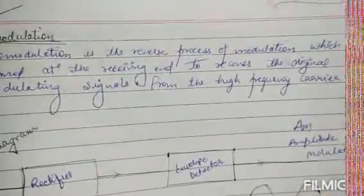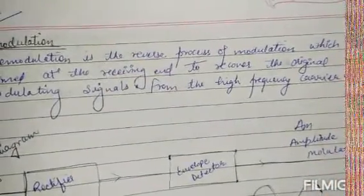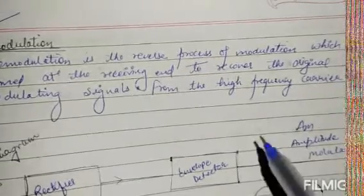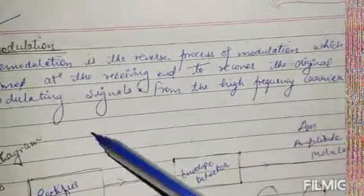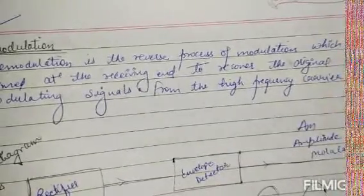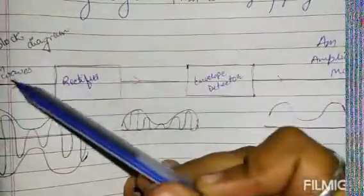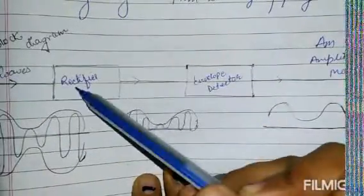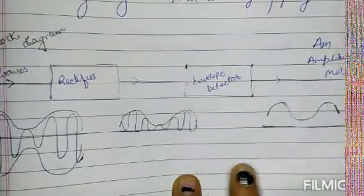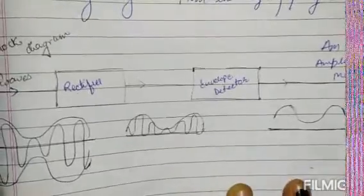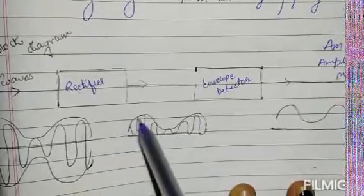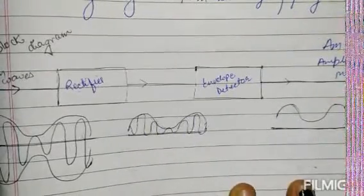Now we talk about demodulation. Demodulation is the reverse process of modulation, performed at the receiving end to recover the original modulating signal from the high-frequency carrier wave. The block diagram consists of the amplitude modulated wave passing through a rectifier and then an envelope detector, which separates out the original modulating signal.